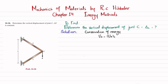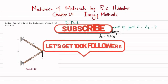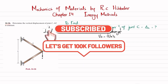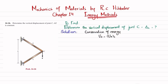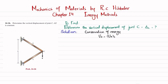Welcome back to another problem — this is problem 14-26, taken from Chapter 14, which is the Energy Method chapter. The book is Mechanics of Materials by R.C. Hibbeler. The problem statement is: determine the vertical displacement of joint C.